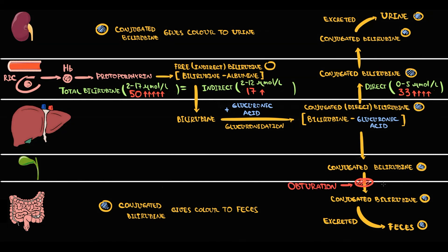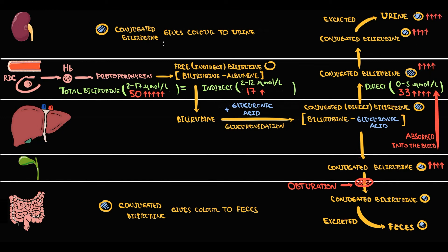The most common cause of posthepatic jaundice is obstruction in the biliary tract. If obstruction of the common bile duct develops, conjugation of bilirubin still works fine — all bilirubin produced in the bloodstream is taken up by hepatocytes, conjugated with glucuronic acid, producing conjugated bilirubin. But the majority of bilirubin is excreted through the bile, and with obstruction, conjugated bilirubin cannot be excreted. It accumulates in the biliary tract and is then absorbed into the blood, dramatically increasing conjugated bilirubin levels. From the blood it is excreted into the urine, giving urine a very dark color. Also, bilirubin cannot pass into the intestine, and the decreasing concentration of bilirubin in the stool results in stool discoloration.